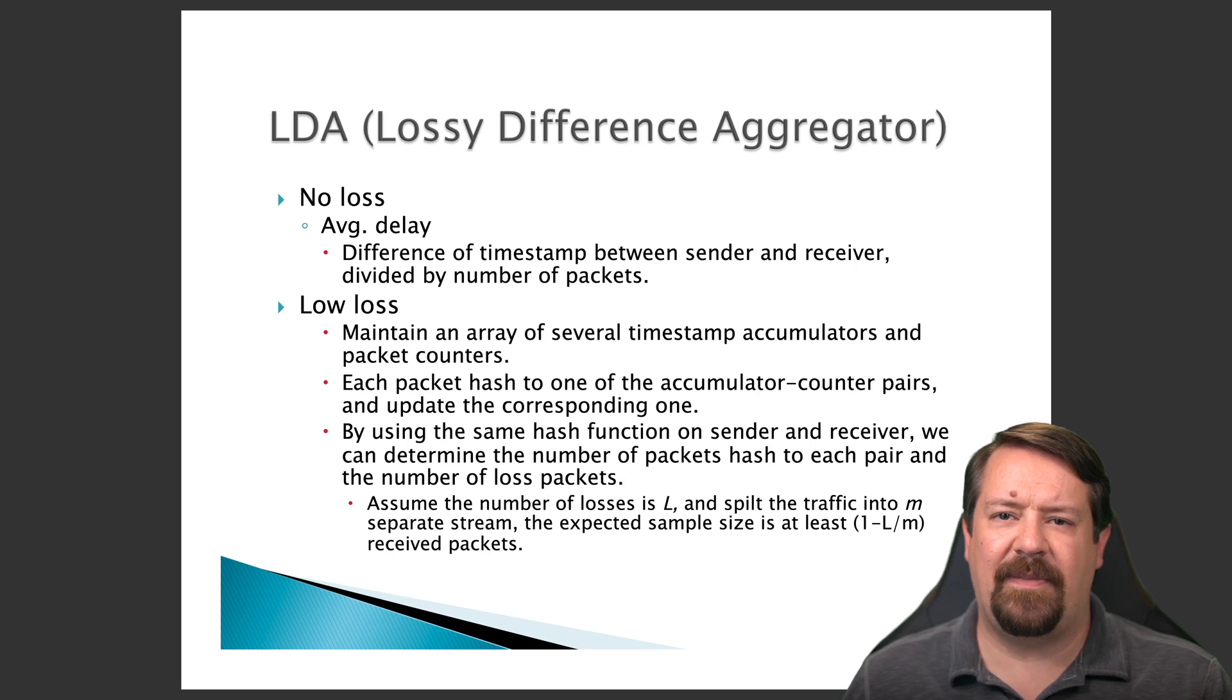As we've seen in previous talks, it would not be scalable for the devices to try to keep track of every individual packet. So in the case where losses are observed, both the sender and the receiver maintain an array of several timestamp accumulators. So if there's a loss, it'll prevent the computation for one of those accumulators from working, but they'll still have an estimate from the other accumulators.